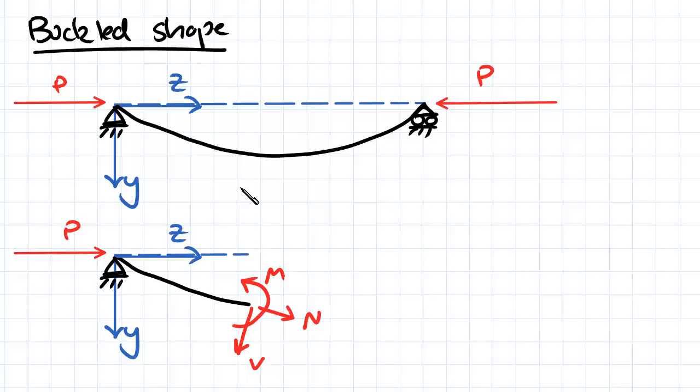So at this point here, it has deflected some amount Y and it's got some corresponding bending moment here. So if we can somehow work out the bending moment at this point, we can then relate that back to that deflection and then hopefully come up with the buckling load P that causes our beam to get this shape.